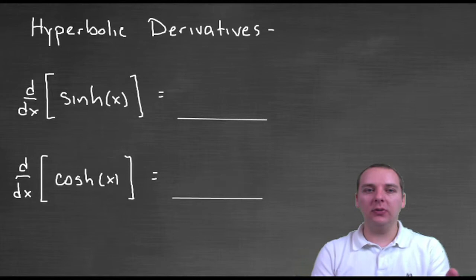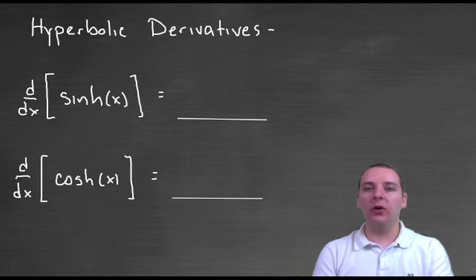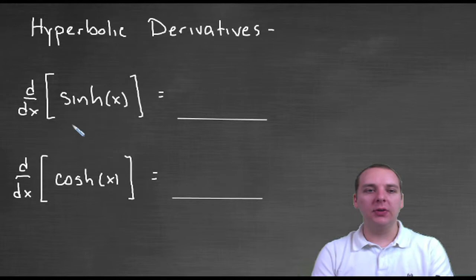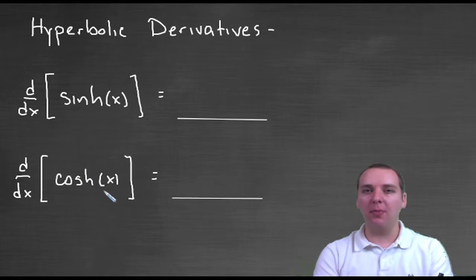Now, there's six main hyperbolic functions and so it takes some time to derive all six. So we're not going to derive all six, we're going to derive one or two and then I'll give you the list for the rest of them which are derived in a similar way. Okay, so for the first ones here, let's look at the derivative for hyperbolic sine and hyperbolic cosine, two of our main hyperbolic functions.